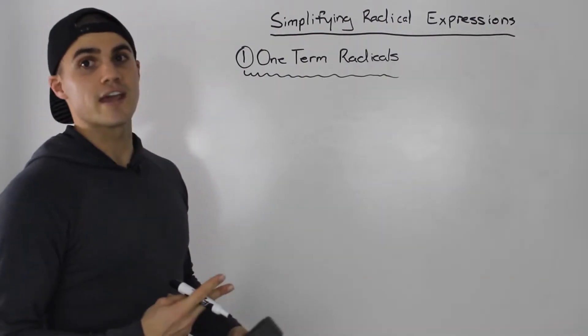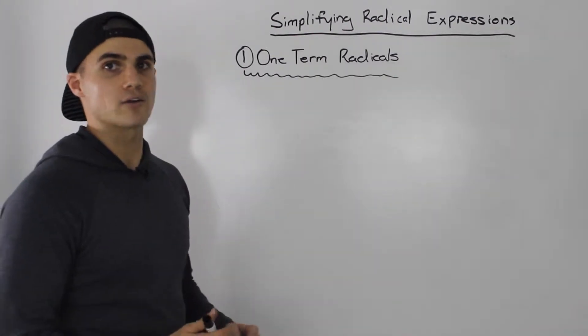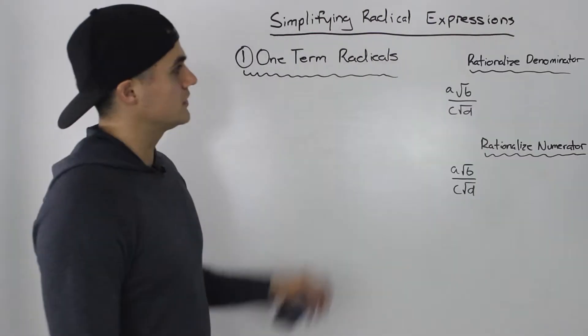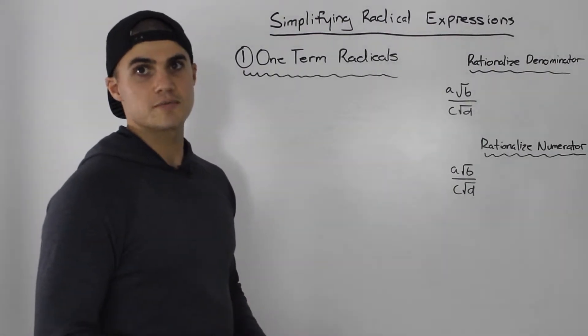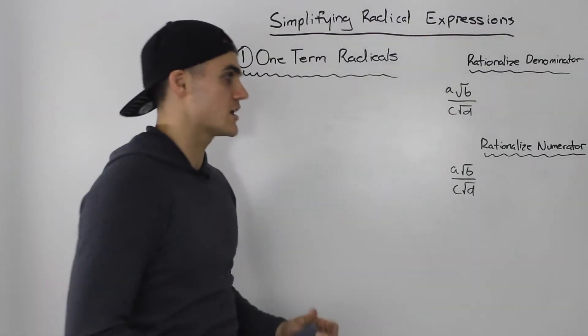You're going to run into two cases. You're going to have one-term radicals or two-term radicals. Let's deal with the one-term radicals for now. When dealing with one-term radicals, you're going to run into two types of questions. You'll either have to rationalize the denominator or you'll have to rationalize a numerator.